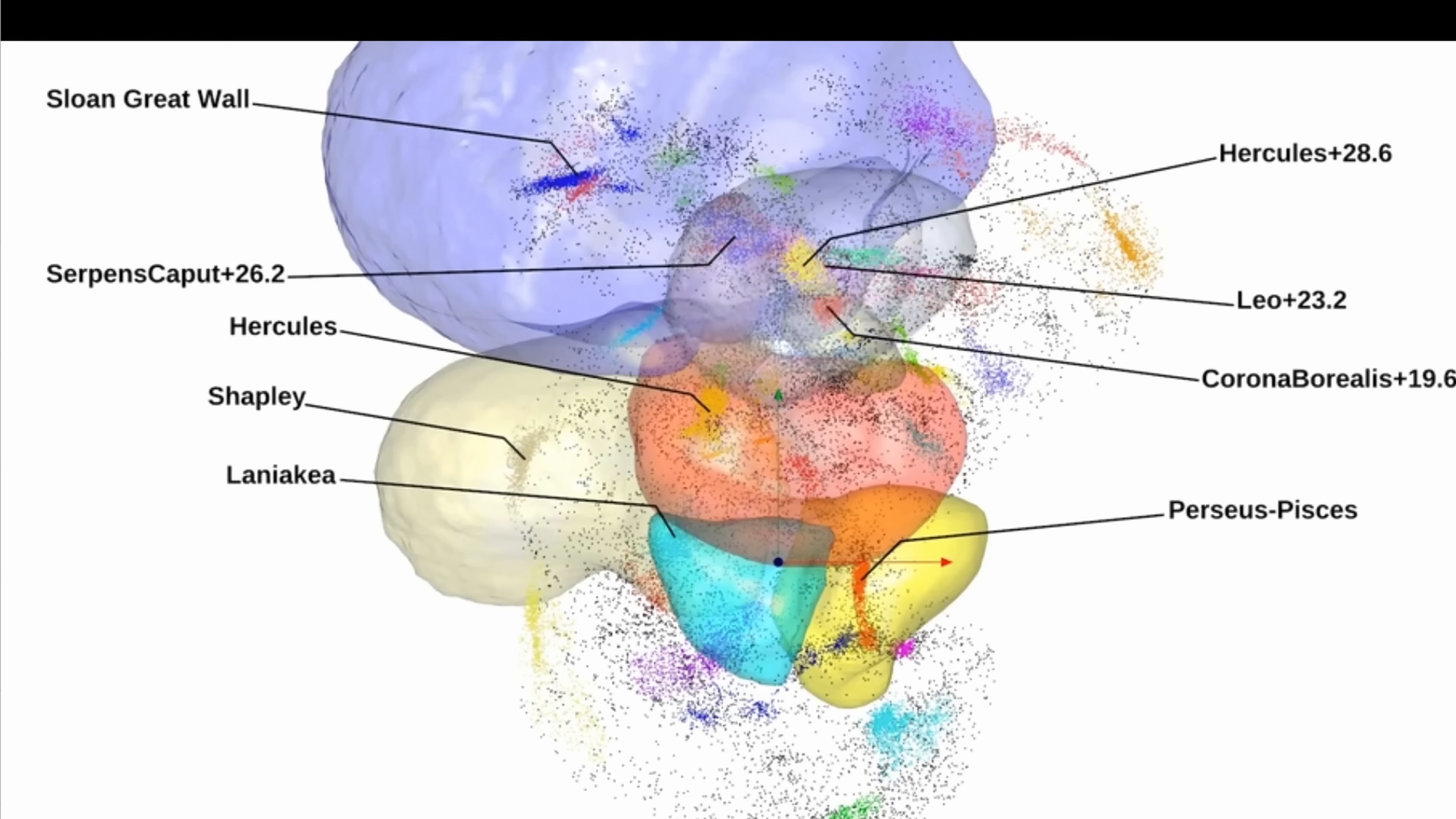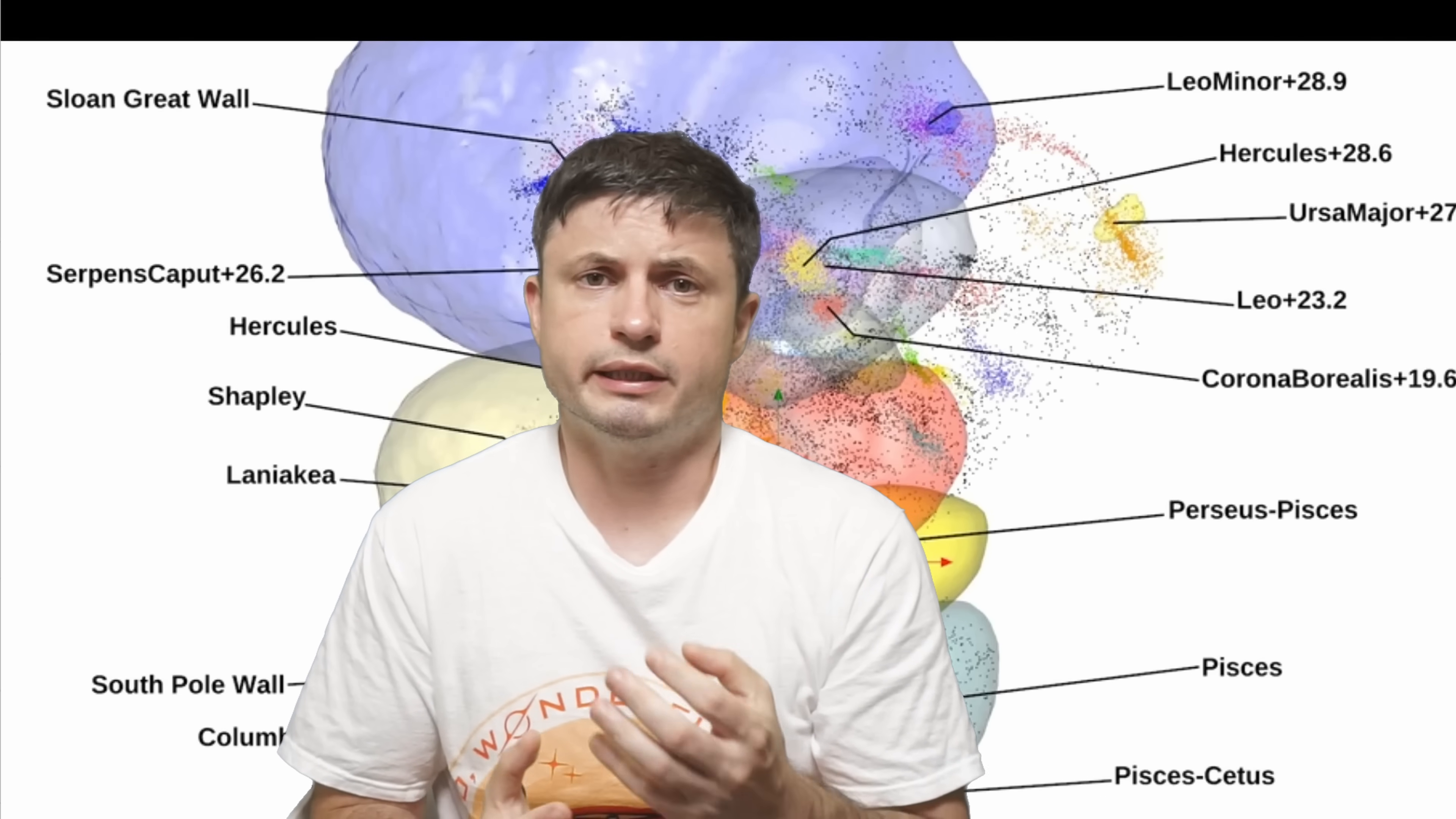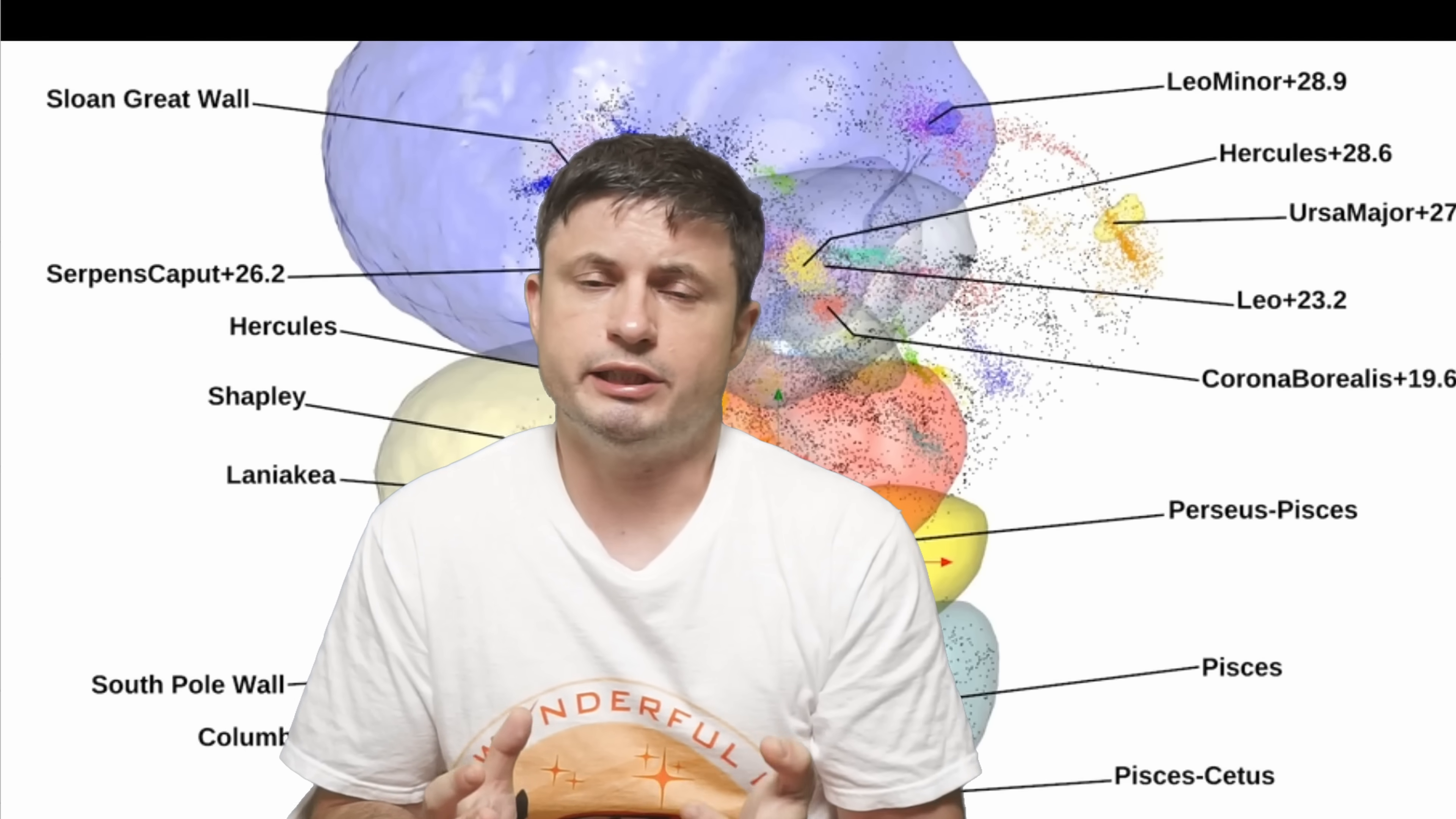Although when it comes to understanding the actual map of the universe, I think this here presents us with the best visual representation. Here this shows us the distribution of these basins of attraction and various loosely connected superstructures that hundreds of thousands of galaxies seem to form as they travel in the cosmic web.